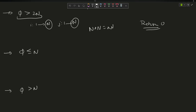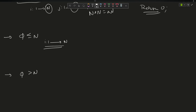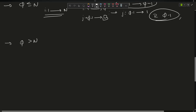Second case: if q is less than or equal to n. Here i goes from 1 to q, and corresponding j goes from q minus 1 down to 1. But j cannot be 0, so i goes from 1 to q minus 1 and j from q minus 1 down to 1. I only count the number of valid i values, so the answer is return q minus 1.